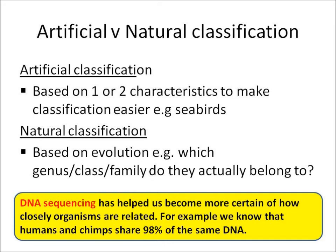Finally, you need to know a little bit about DNA sequencing, and that it has helped us become more certain of how closely organisms are related. For example, we know that humans and chimps are really closely related because we've worked out through DNA sequencing that they share 98% of the same DNA.